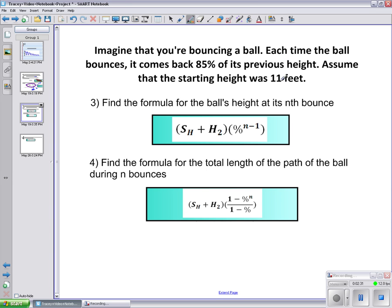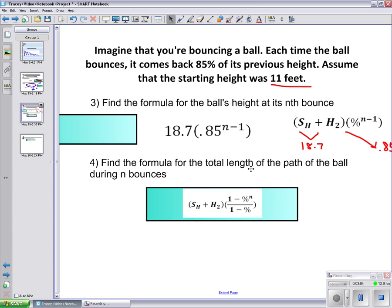Find the formula for the ball's height at its nth bounce. Again, it's 11 feet. You're going to input your percent value again, which is 85%. Since you don't know how many bounces it's at, you're just going to leave it at n. The starting height plus the second one is 18.7. You should get 18.7 times 0.85 to the n minus 1.